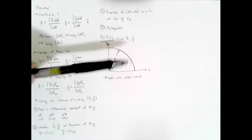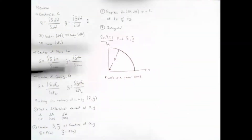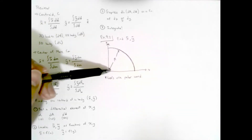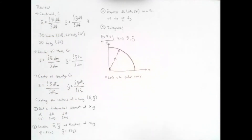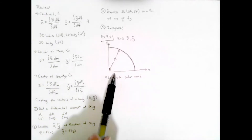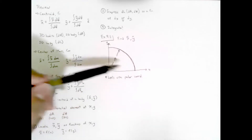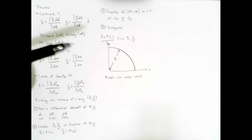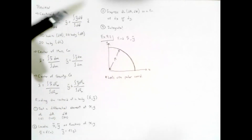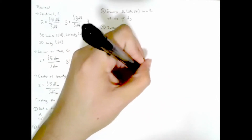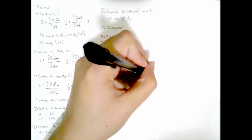Cartesian coordinates look at everything in terms of x and y — in terms of two perpendicular axes. What about polar coordinates? In Cartesian coordinates we look at everything in terms of x and y. In polar coordinates, instead of looking at things in terms of horizontal and vertical components, we're going to look at it in terms of a radius and an angle. So whereas Cartesian coordinates locate points using x and y, polar coordinates will help us locate points using the radius and the angle.